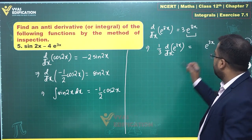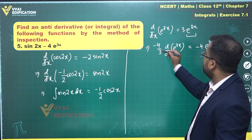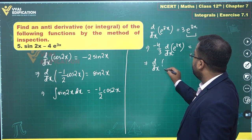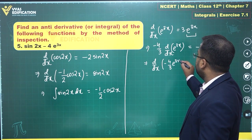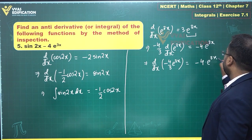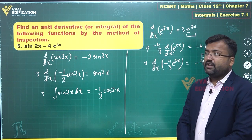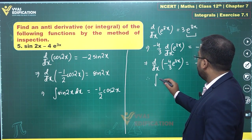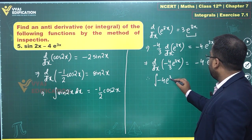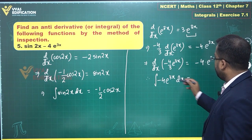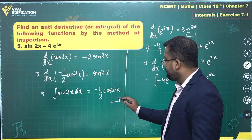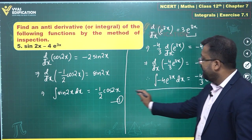Now multiply by −4 as well: −4 times (1/3) d/dx of e^(3x) = −4e^(3x). This −4/3 can go inside, giving d/dx of (−4/3 e^(3x)) = −4e^(3x). Therefore, the integral of −4e^(3x) dx equals −(4/3)e^(3x).